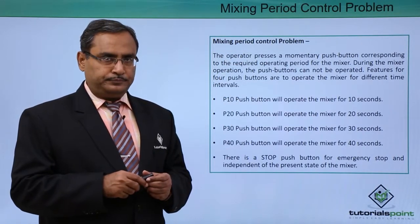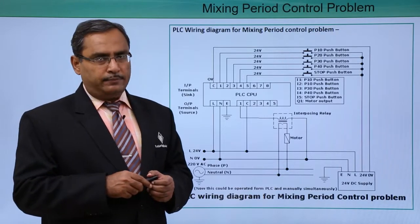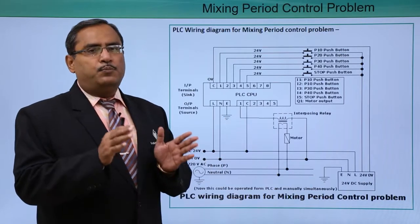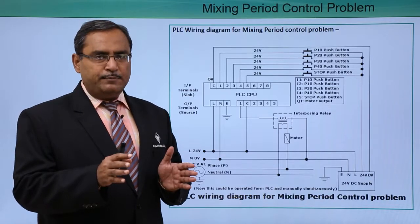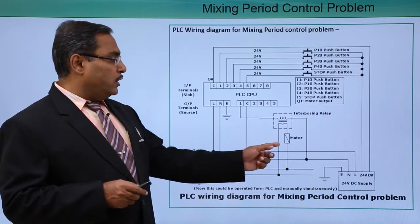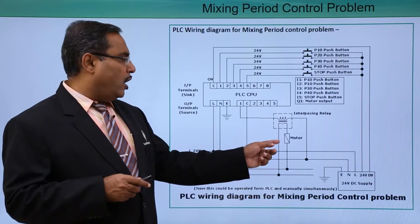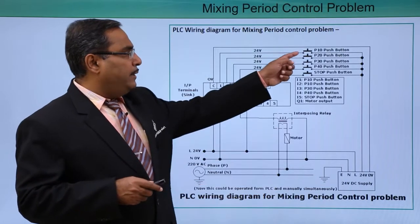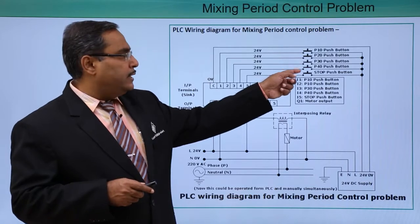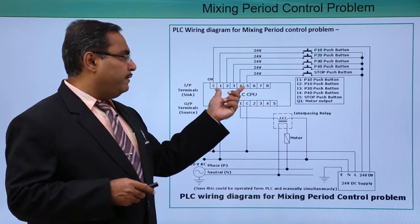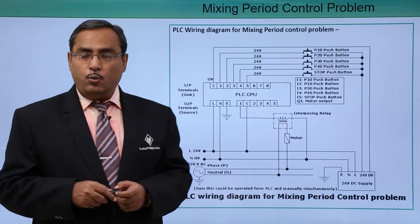Now let us go for the PLC wiring diagram. This wiring diagram I am proposing; depending upon the respective accessories and PLC model, this diagram can be changed. There is only one mixer motor as the output. We have push buttons P10 to P40 — four push buttons — and one stop button, giving us 5 inputs and only one output in this PLC wiring diagram.